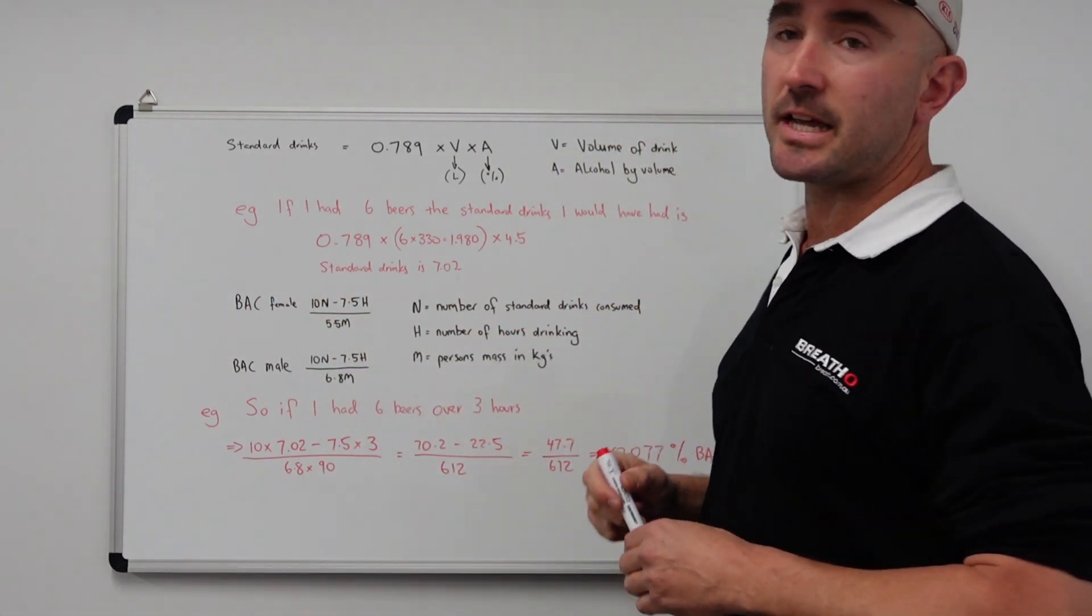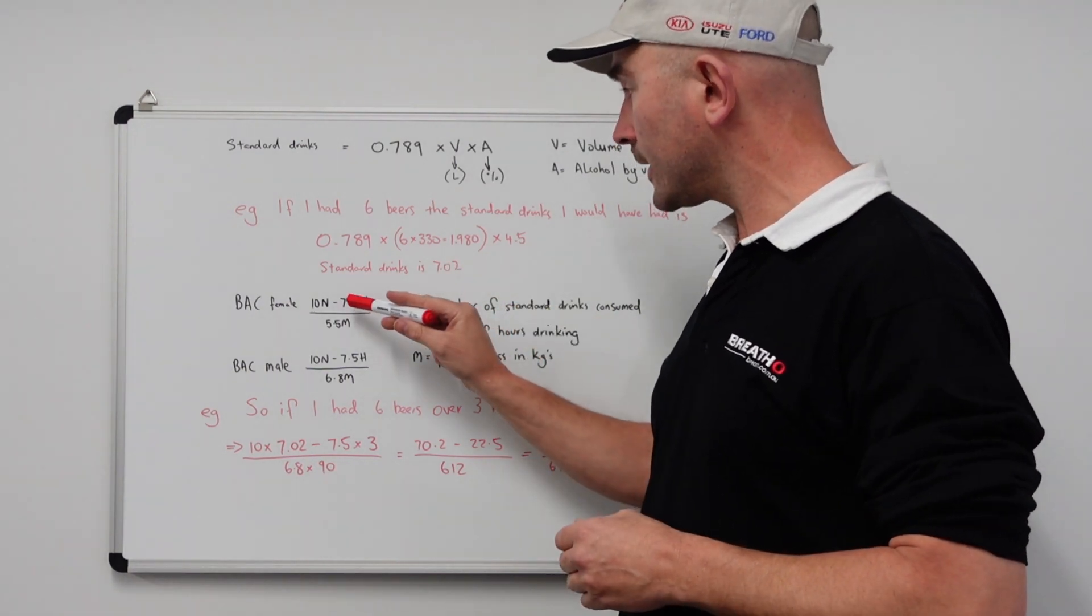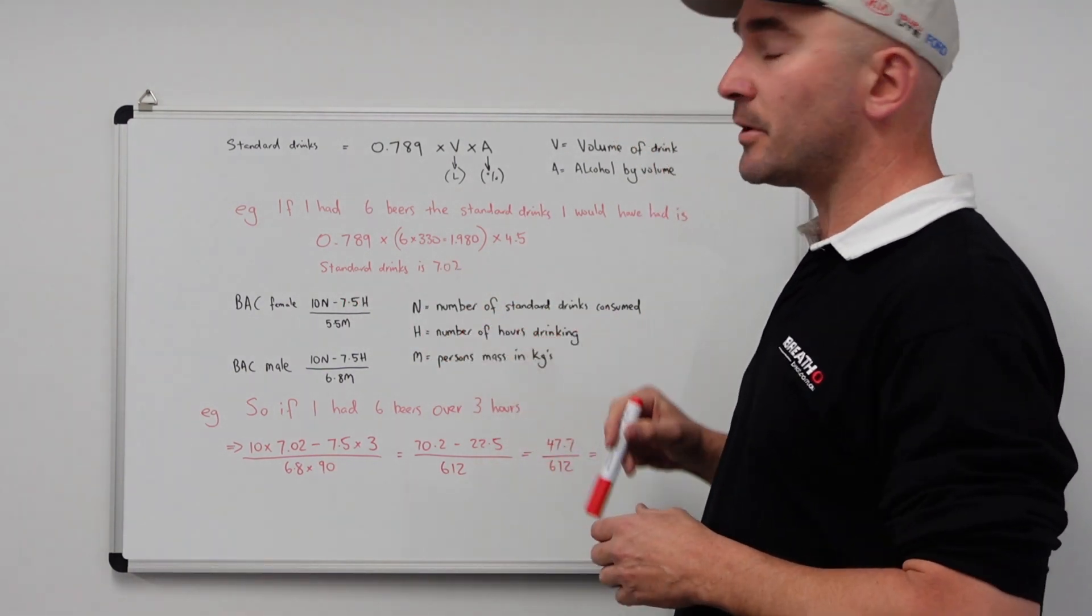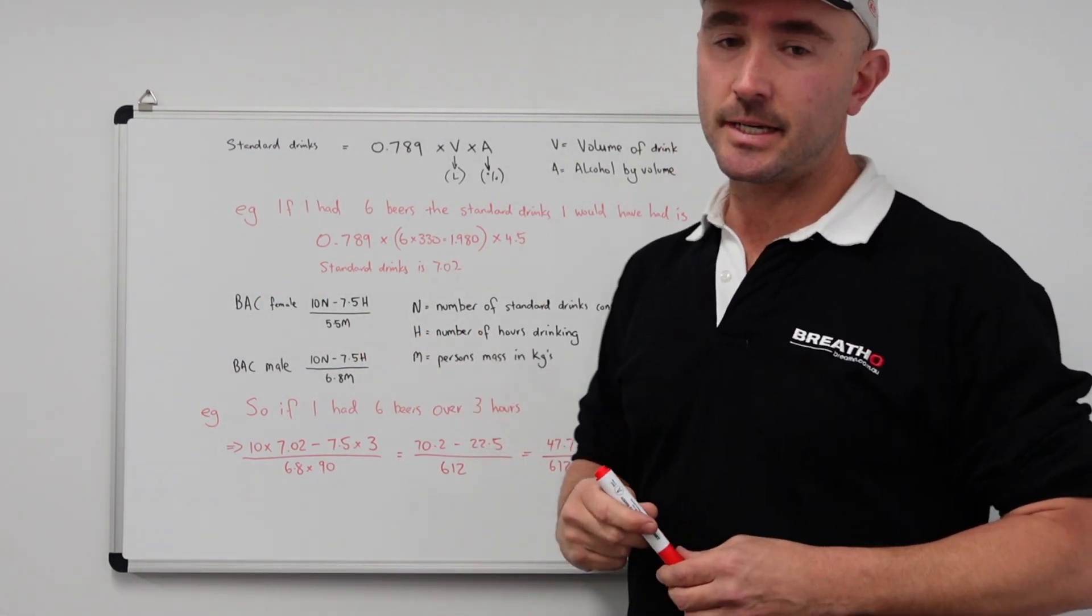So let's go ahead and work out what these letters mean. N equals number of standard drinks consumed, which we have that number here. H is number of hours drinking and M is a person's mass in kilograms.